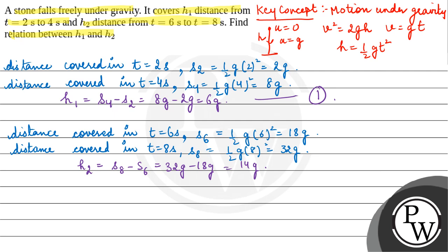We need to find the relation between h1 and h2. So h1 is 6g and h2 is 14g. The ratio is 6 by 14, which simplifies to 3 by 7.